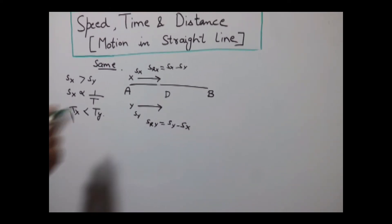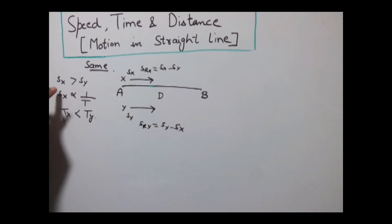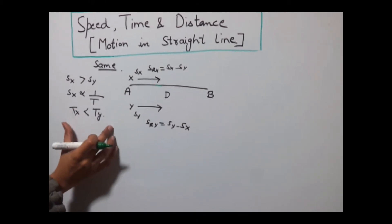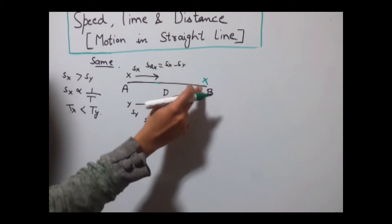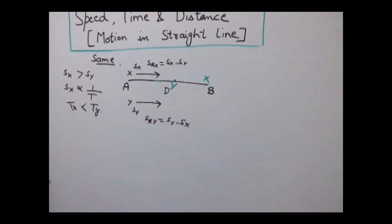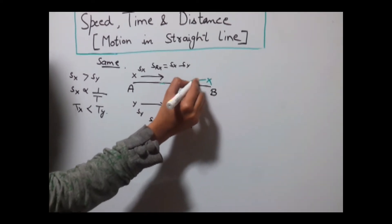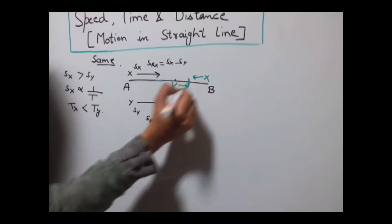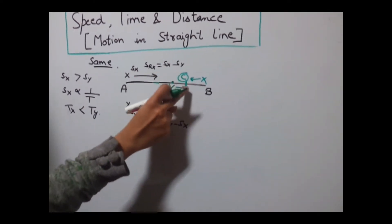If these two objects are travelling in the same direction with speeds SX and SY, and the speed of X is greater than Y, then X will reach point B earlier in comparison to Y. Say X reaches point B in one hour. When X reaches point B, it will again start moving in the opposite direction while Y continues moving in the same direction, and they will meet at some point, say point C. This is called the first meeting point.